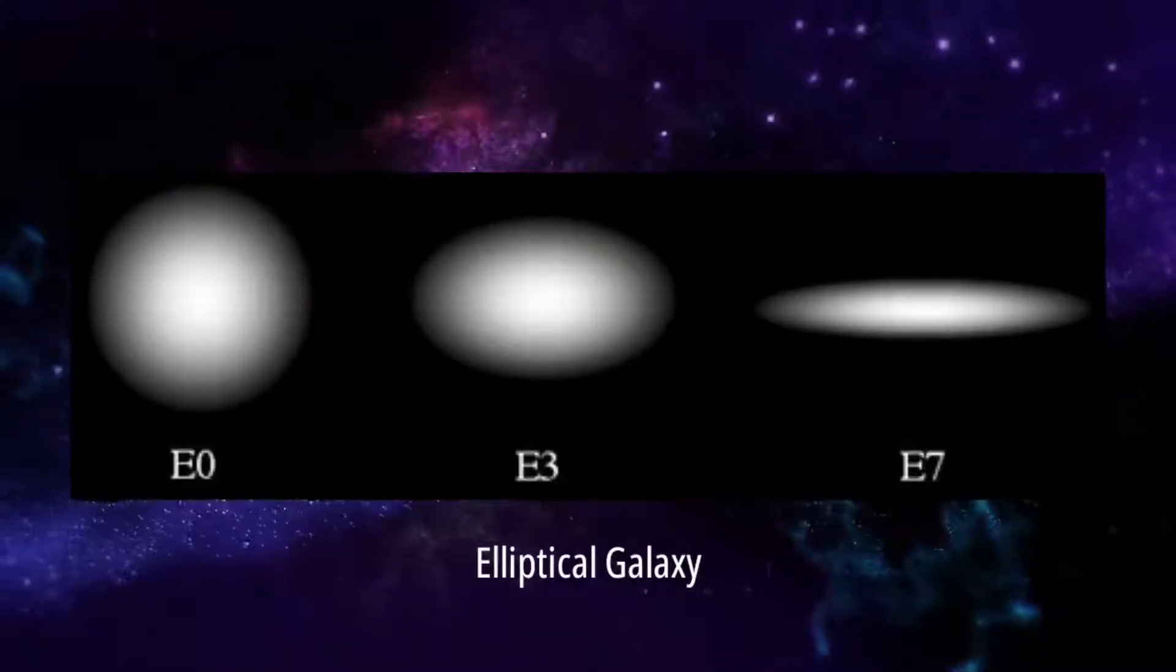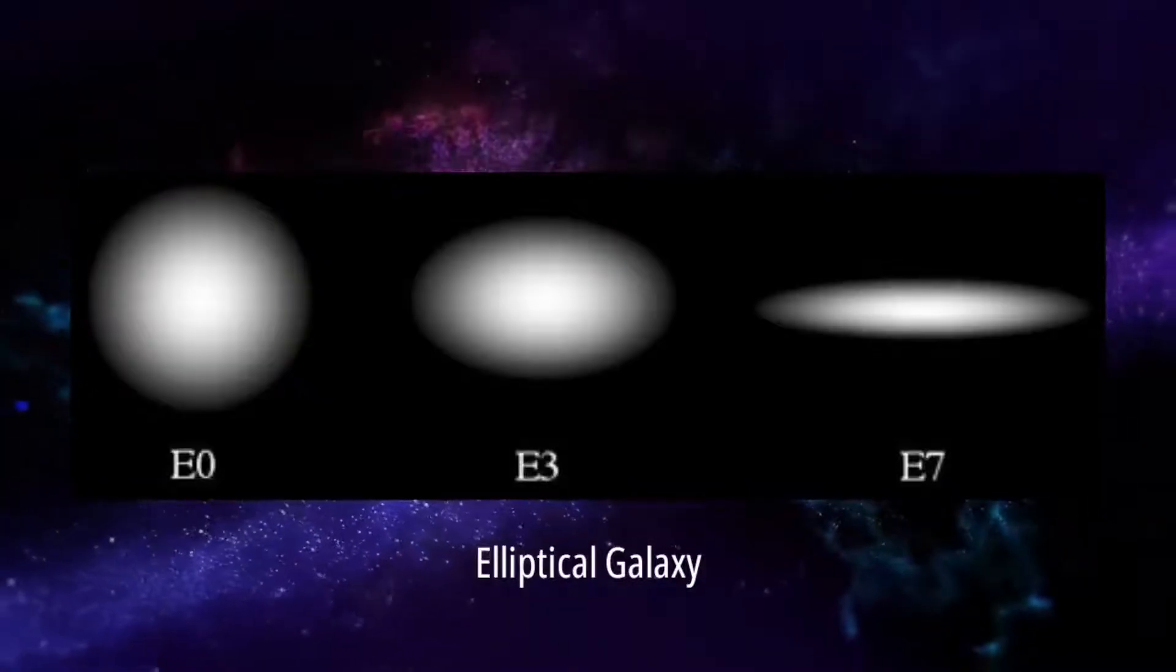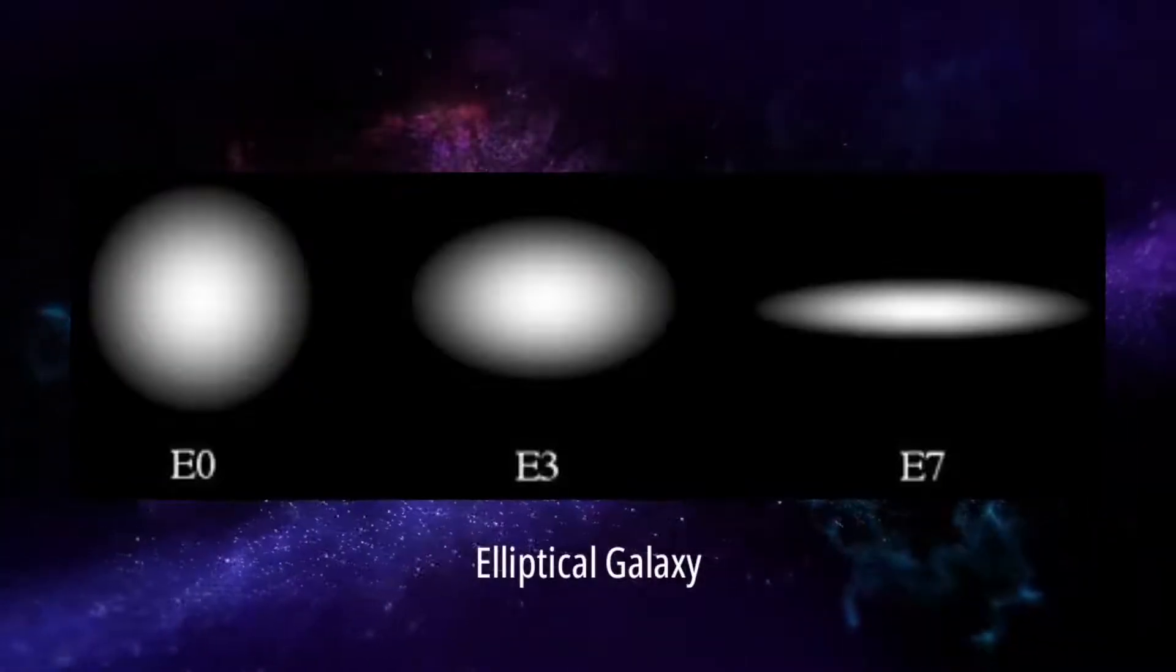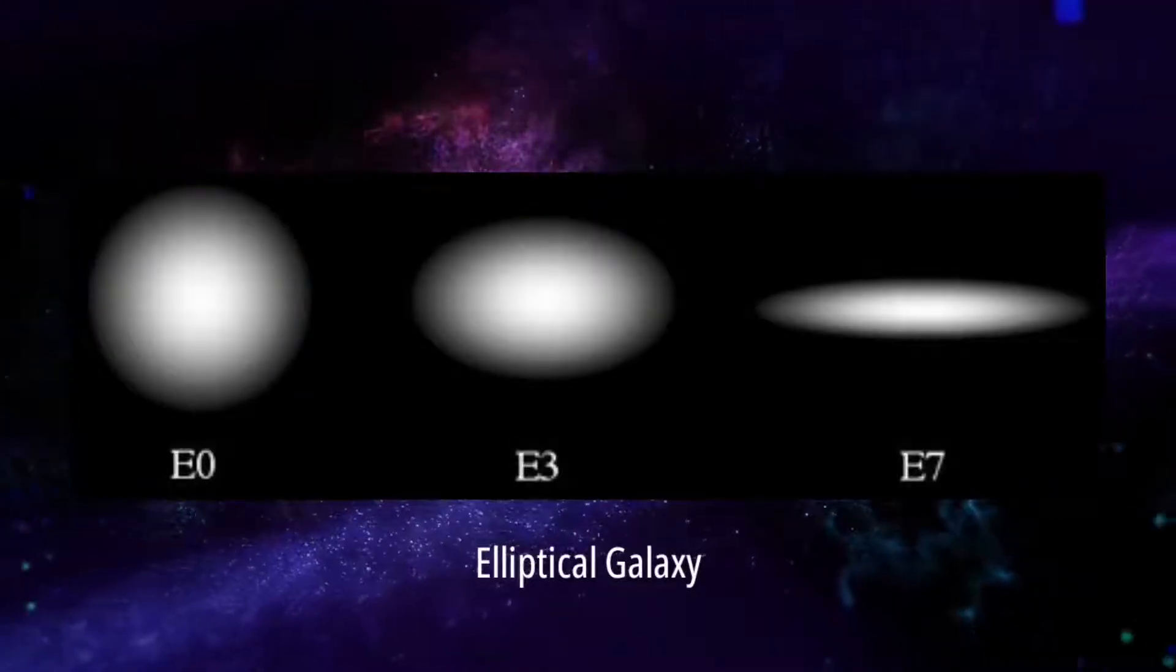A galaxy's appearance is related to how it lies on the sky when viewed from Earth. A galaxy having the E7 shape but seen head-on would appear as an E0, for instance, because observers would not see its stretched shape, which lies behind it.